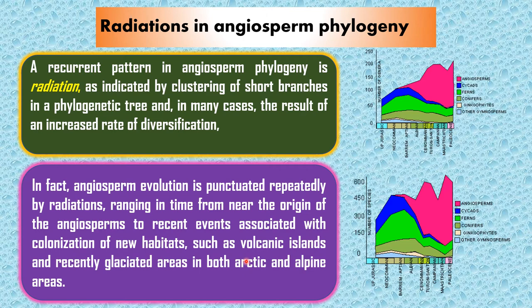Most phylogenicists suggest that angiosperms had difficulty competing with ferns and tall gymnosperms, yet at the end of the Cretaceous (65 million years ago) angiosperms had become major contributors to biomass — not only in disturbed or aquatic habitats but also in stable terrestrial environments where competition with gymnosperms must have played a significant role.